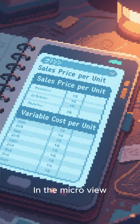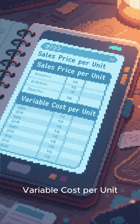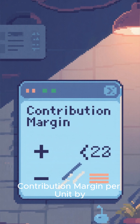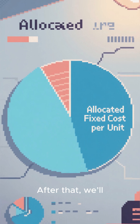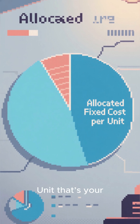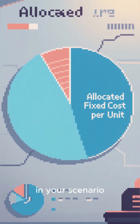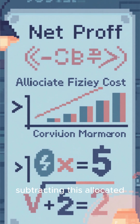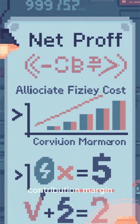In the micro view, we'll list the sales price per unit and variable cost per unit, then calculate the contribution margin per unit by subtracting the variable cost from the price. After that, we'll calculate the allocated fixed cost per unit — that's your total fixed cost divided by the number of units in your scenario. Finally, we'll find the net profit per unit by subtracting this allocated fixed cost from the contribution margin.